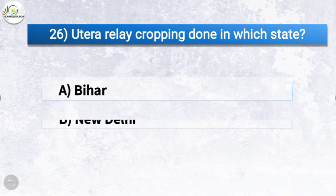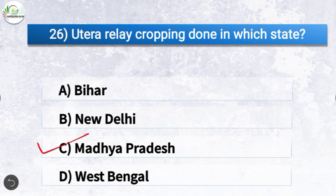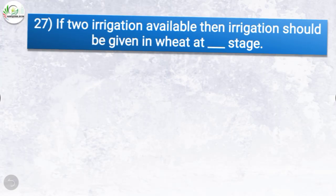Question number twenty-six: utera relay cropping is done in which state? The options are Bihar, New Delhi, Madhya Pradesh, or West Bengal. The correct answer is option C, Madhya Pradesh. So utera relay cropping is done in Madhya Pradesh.